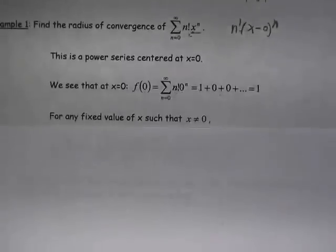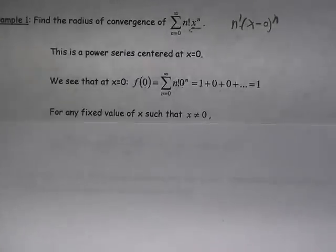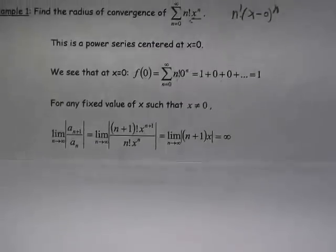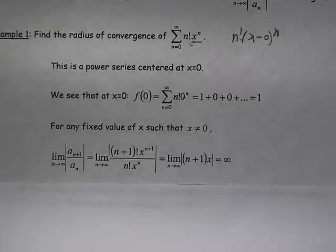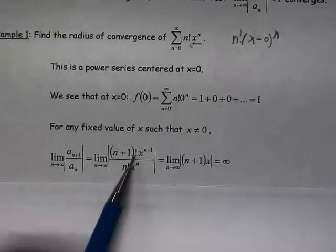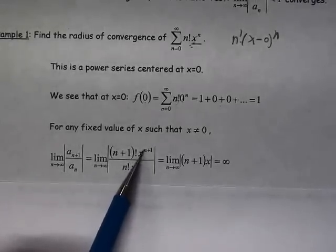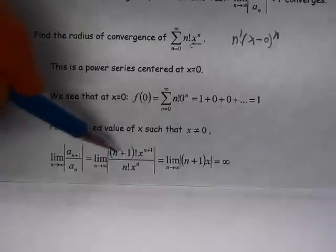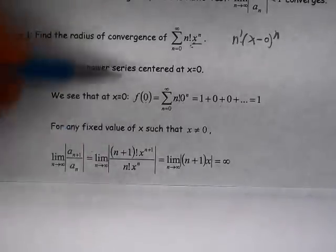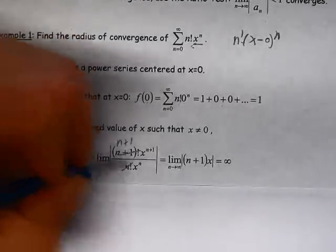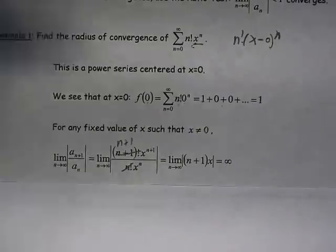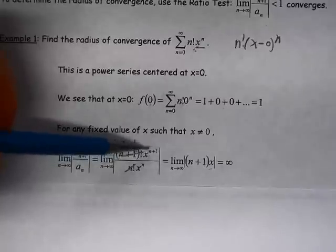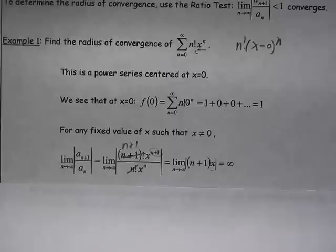So as long as we take a fixed value of x, we're going to look at this ratio test. So we have n plus 1 factorial times x to the n plus 1 over n factorial times x to the n. So everything in these factorials cancels out except for n plus 1. And everything with these x's cancels out except for an x. I have x to the n plus 1, x to the n. I subtract the exponents, I get x. So this is the limit I end up with.